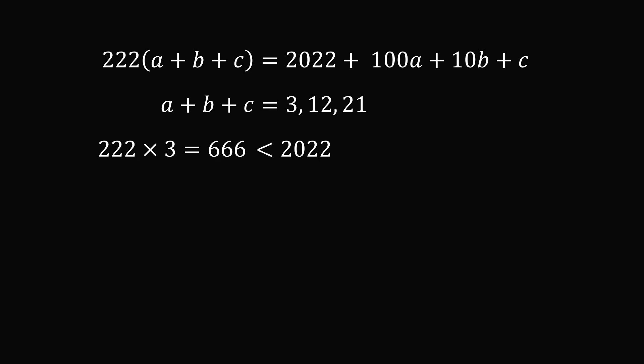What if A plus B plus C were equal to 21? Substituting into the left hand side of the equation, we get the result of 4,662. Is it possible that this result is equal to 2,022 plus 100A plus 10B plus C? Well, suppose A, B, and C were all at their maximum value of 9. We would still end up with a number on the right hand side that's too small. 4,662 is greater than 2,022 plus 900 plus 90 plus 9. So we can't have A plus B plus C is equal to 21. That only leaves one possibility, which is A plus B plus C is equal to 12.